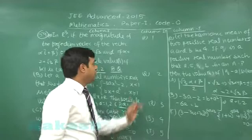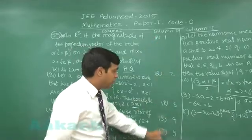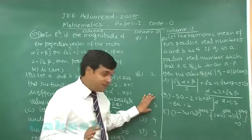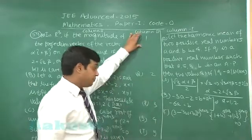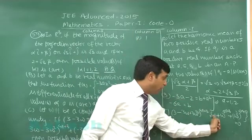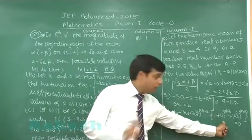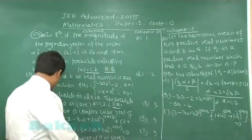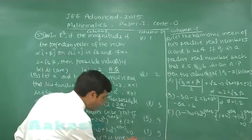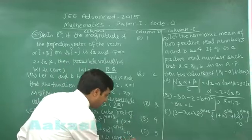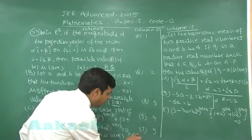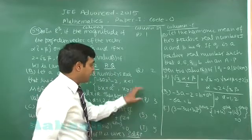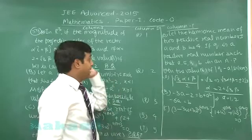We check values 1 through 5 by substitution. When n equals 1: 1 plus omega to the 4th (which is omega) plus omega to the 8th (which is omega-squared) equals 0 — so P is correct. Similarly Q is correct, R is not correct, and S and T follow. The result for this third matrix match part is P, Q, S, T.